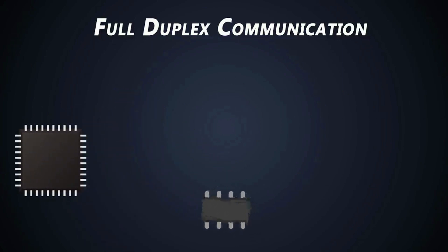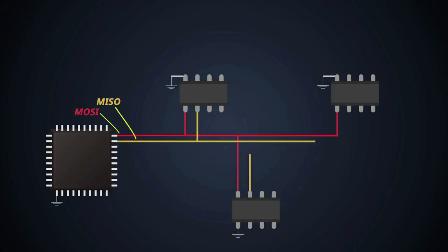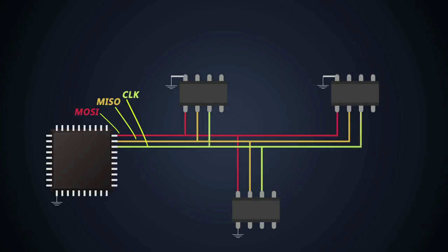A master can be connected to multiple slaves, and there are four dedicated connection lines necessary for SPI communications at the master side. There is MOSI — master out slave in. Then comes MISO — master in slave out — and clock signals. And finally, there is a chip select line.